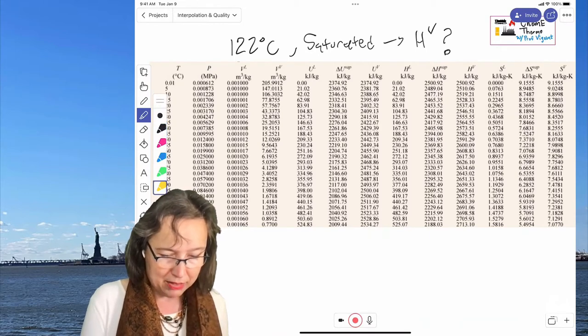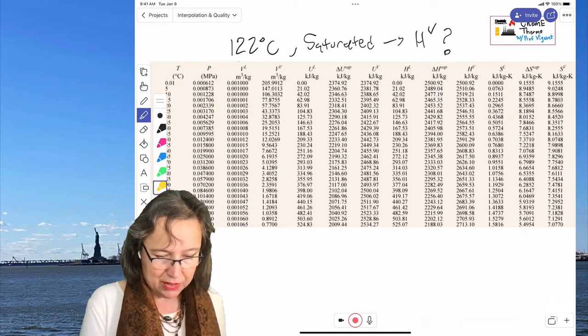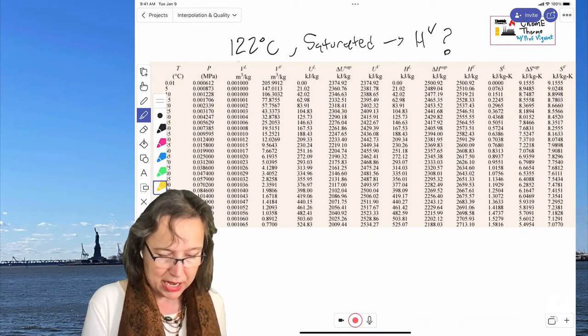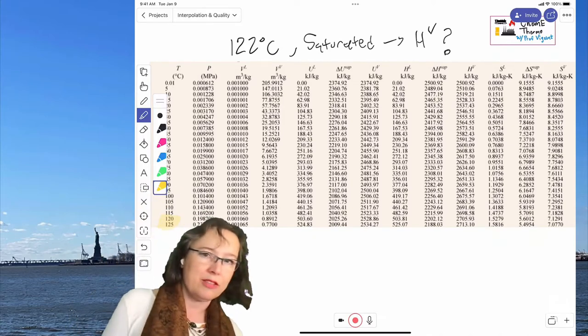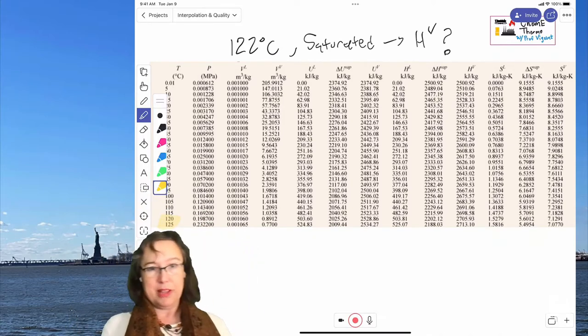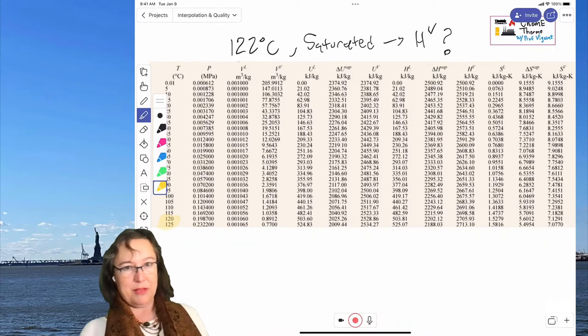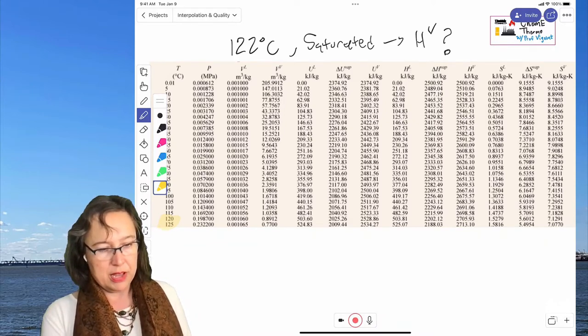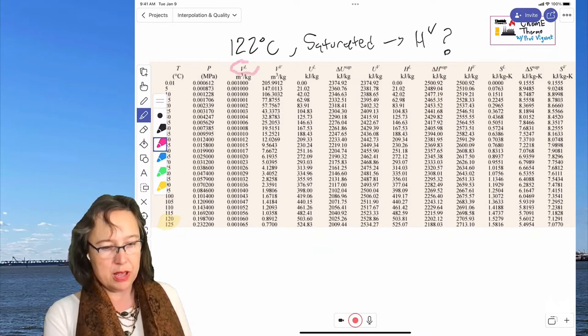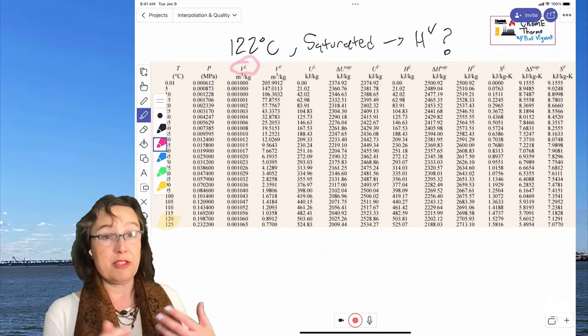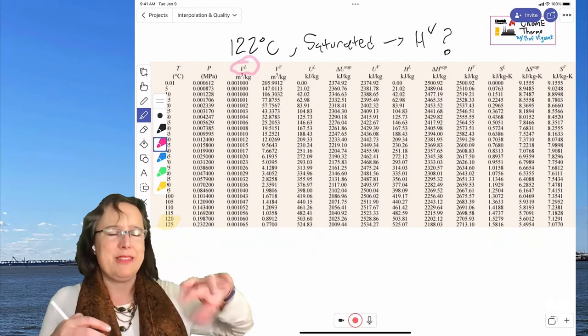And I'm going to grab a highlighter, and so we see that we have values for 120 and 125 Celsius. Oh, they're right behind my head, that's useful, there you go, 120 and 125 Celsius, and coming across, you see we have, in order, that's a volume, specific volume, so it's the flip of density.